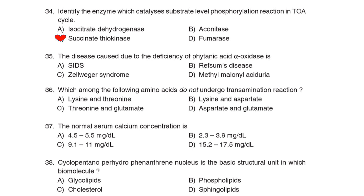34th Question: Identify the enzyme which catalyzes substrate-level phosphorylation in the TCA cycle. Correct Answer: Option C: Succinate thiokinase. 35th Question: The disease caused due to the deficiency of phytanic acid alpha-oxidase is Correct Answer: Option B: Refsum disease.